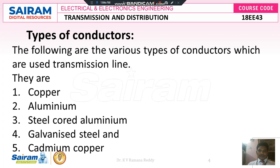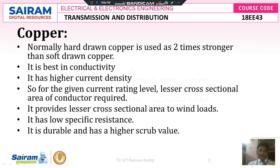There are various types of conductors which are used in the transmission system, and each type of conductor is manufactured from the following materials: copper, aluminium, steel core aluminium, galvanized steel, and cadmium copper. We are going to discuss the properties of each of these materials, since these are the materials used to design conductors that transfer electricity from one end to another.